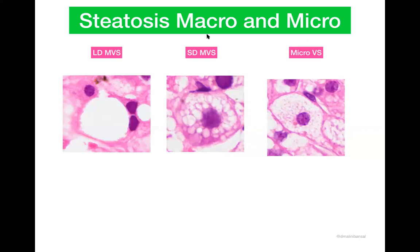Initially, macrovesicular meant that the lipid droplet is going to be large and it is going to push the nucleus to one side, whereas for microvesicular, since the droplets are very tiny, the nucleus is going to be central. But now from our understanding, we know that macrovesicular can again be of two types — large droplet macrovesicular steatosis and small droplet macrovesicular steatosis — and then finally we have microvesicular steatosis, in which we have multiple tiny vacuoles filling the cytoplasm.